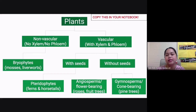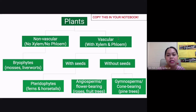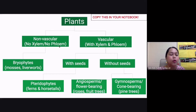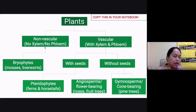On screen is a graphic organizer showing the different classifications of plants. There are two major divisions: non-vascular plants and vascular plants. Non-vascular plants don't have vascular tissues — xylem and phloem. Xylem transports water and nutrients, while phloem transports food. Plants without xylem or phloem are called non-vascular plants, and under this division you have your bryophytes.